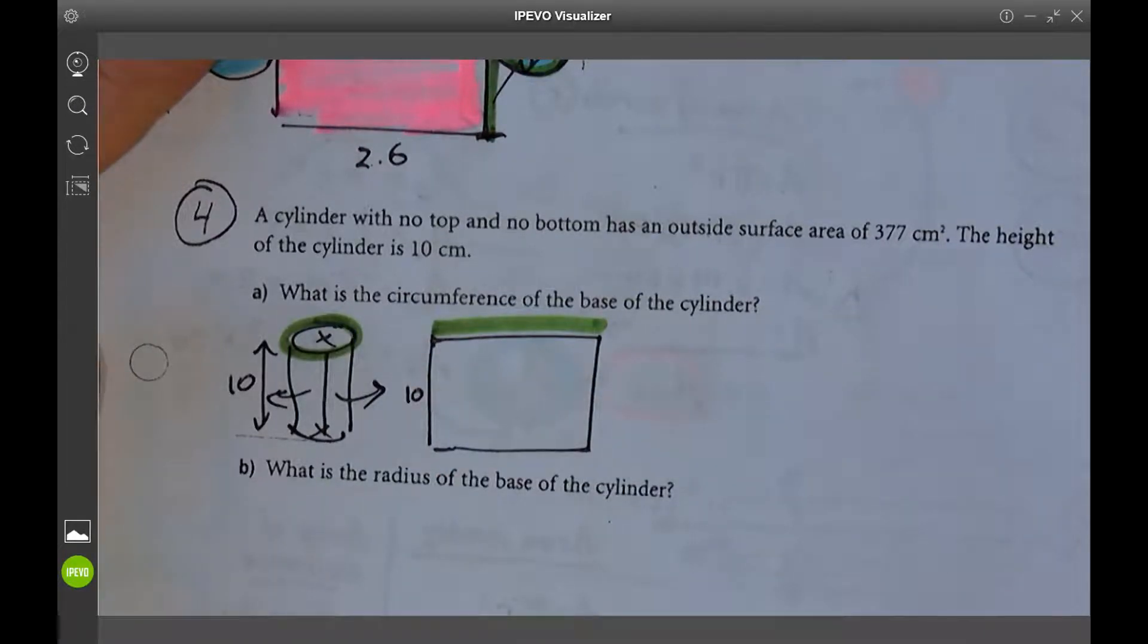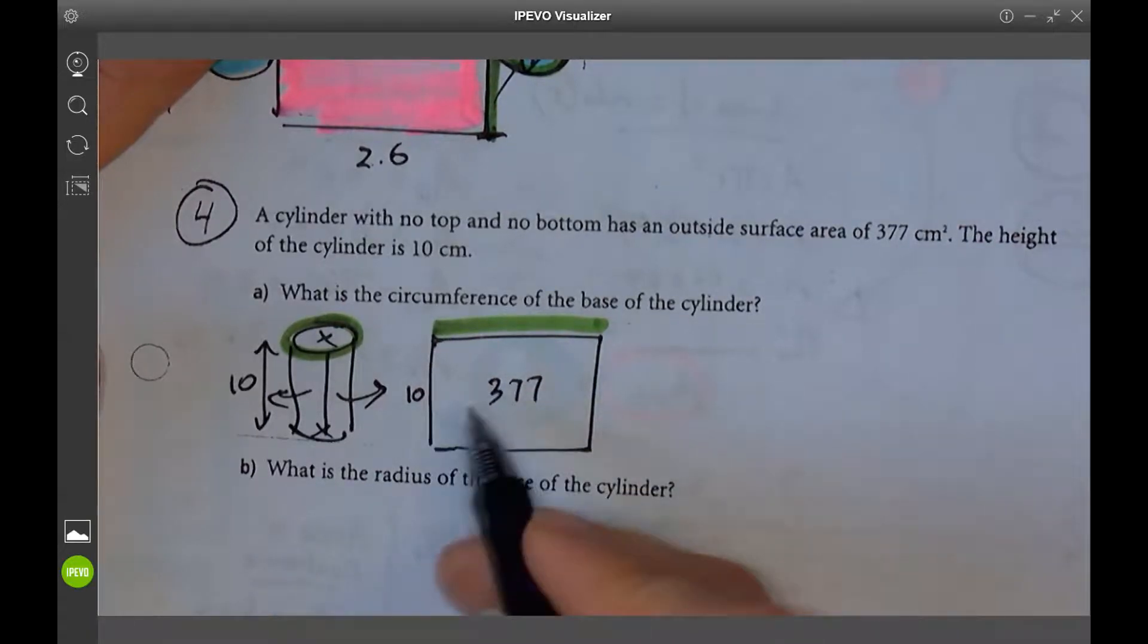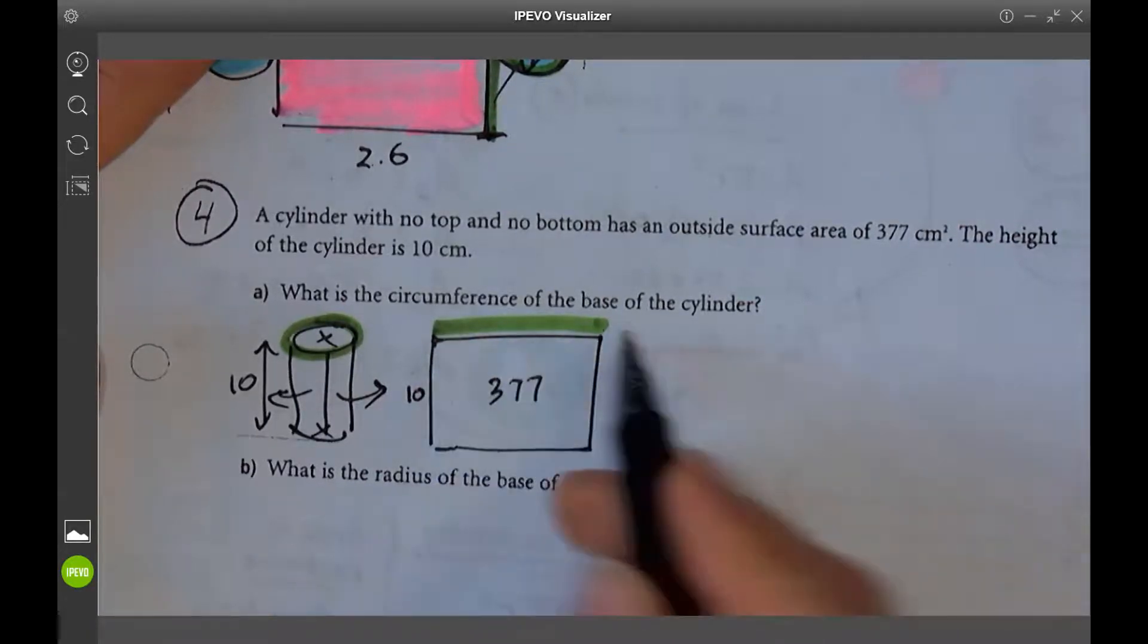What's the total surface area? 377. This area is 377. We need to find out what this is. What's the circumference?